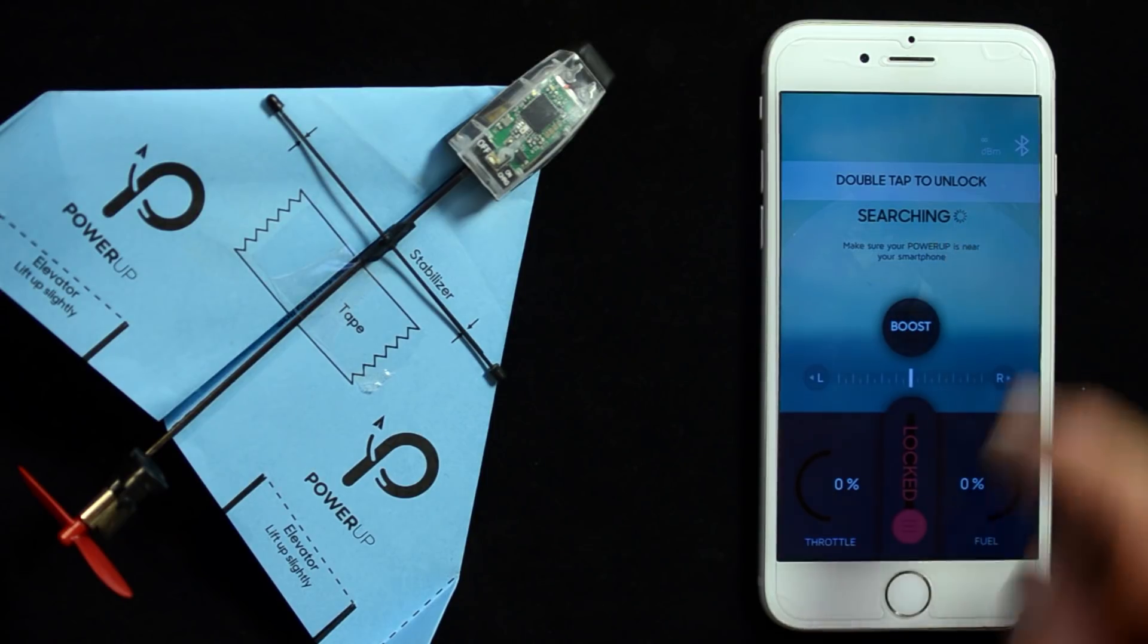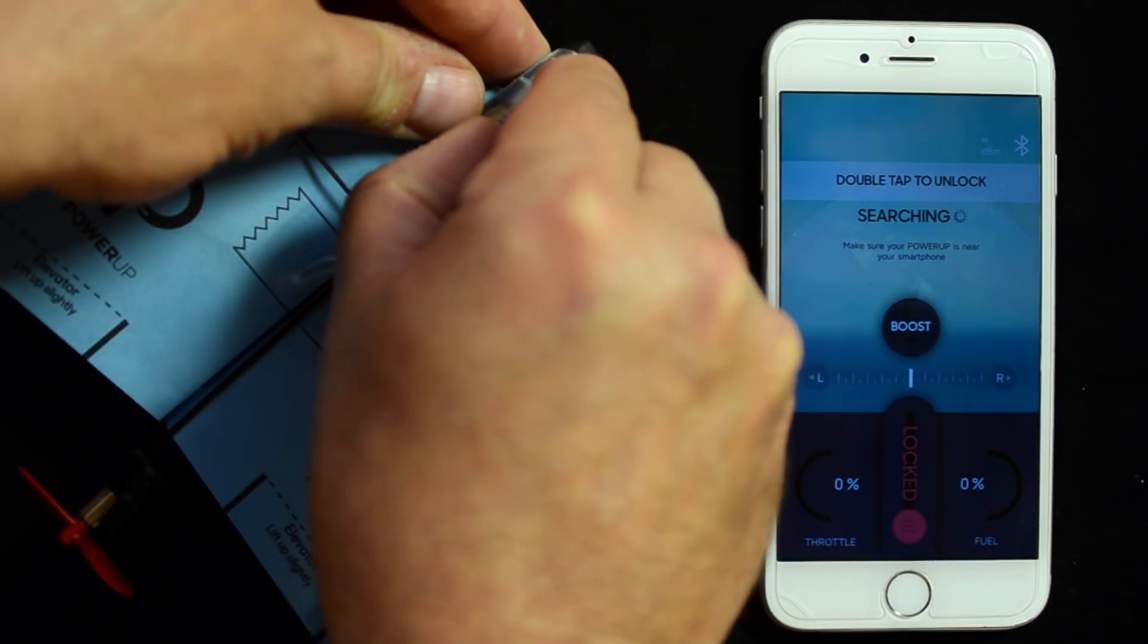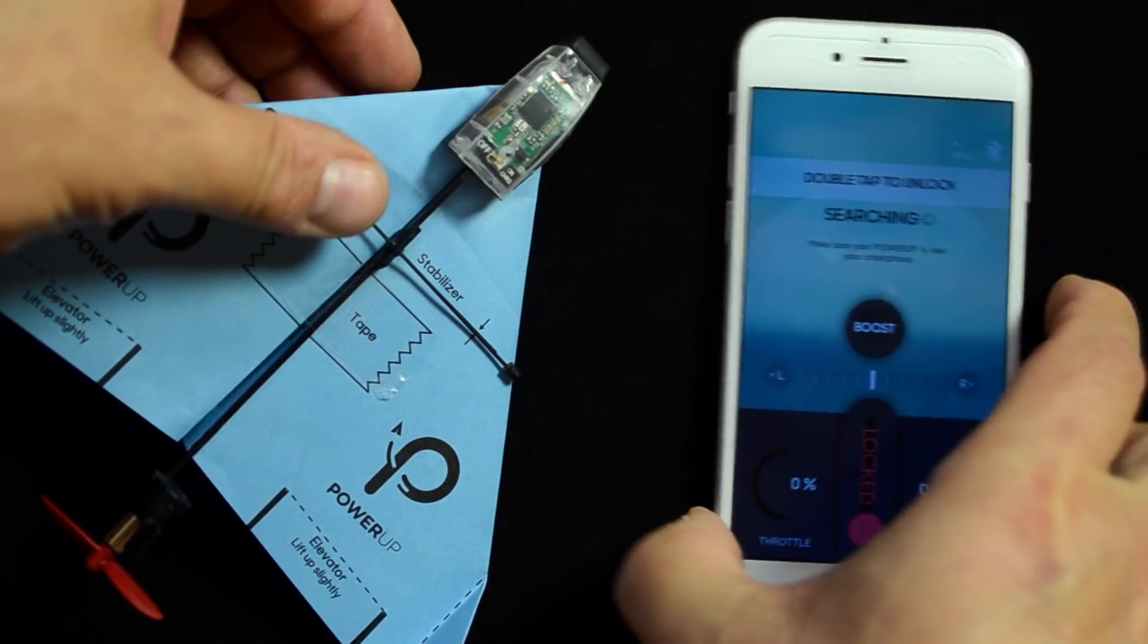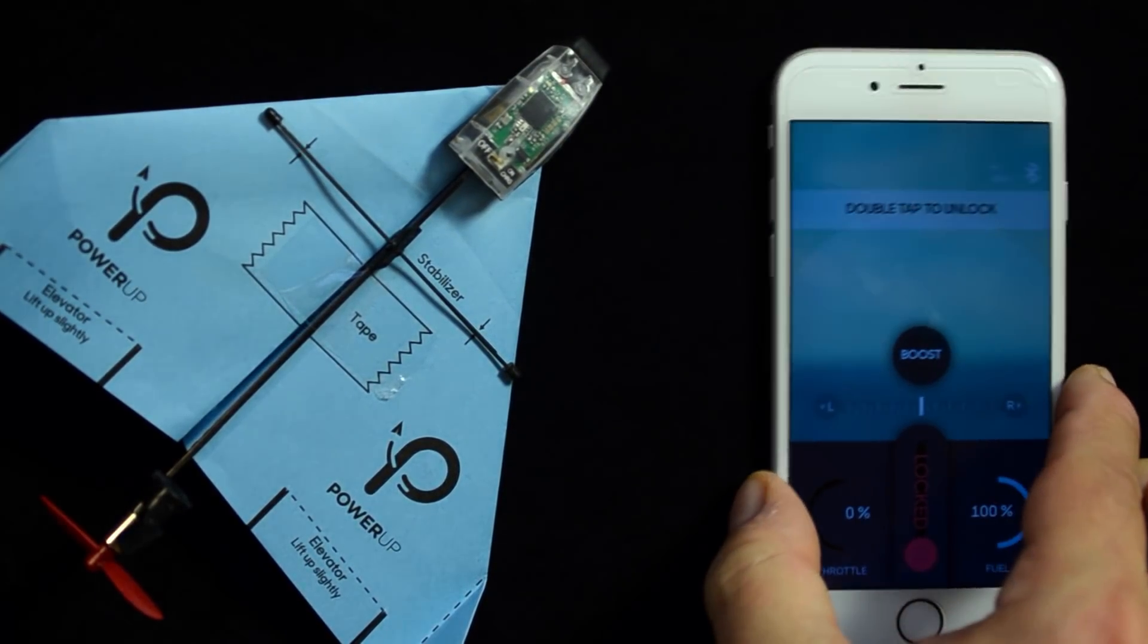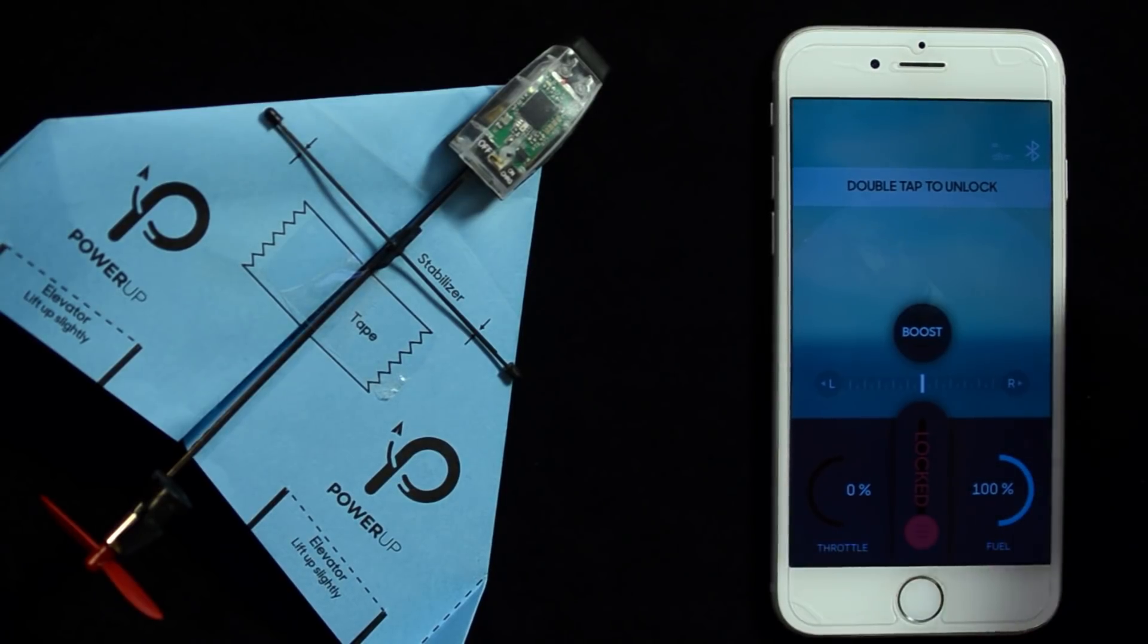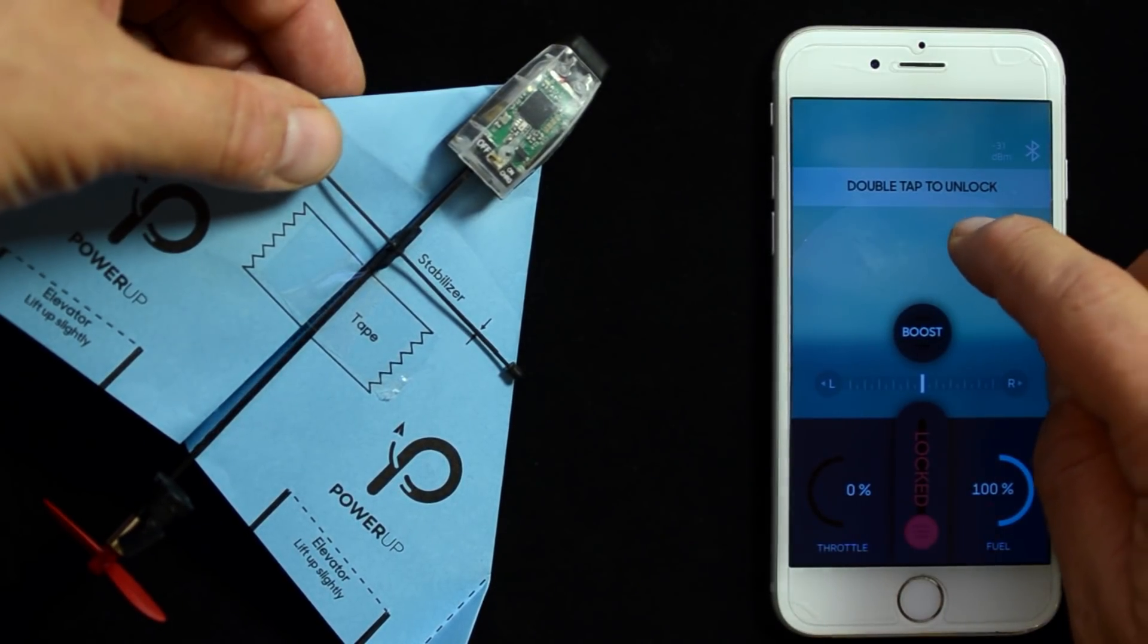searching for an airplane. Once you turn on your module and bring it close to your phone, it'll automatically connect within two seconds. Unlocking the throttle is done by double-tapping the screen.